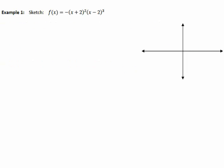Let's look at an example. This function is already factored for us. The zeros are at x equals negative 2 and x equals positive 2. We put those on our graph. Now that we have the zeros, we can find the y-intercept.